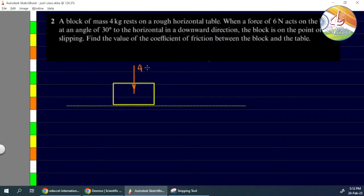The downward force is 4g. A force of 6 Newtons acts on the block at an angle of 30 degrees to the horizontal in a downward direction. The angle here is 30 degrees.